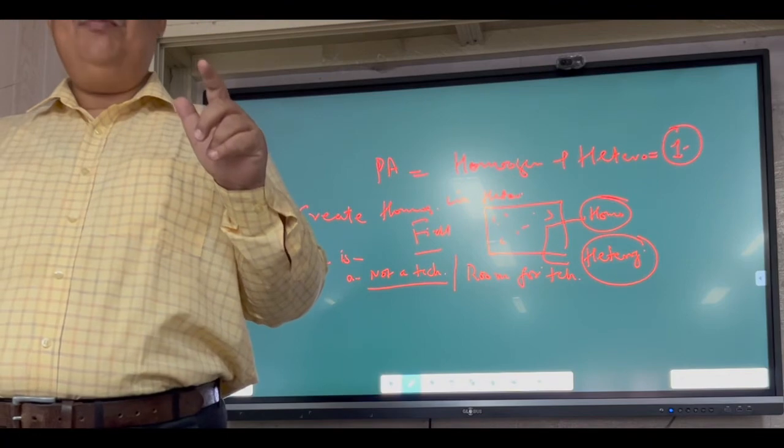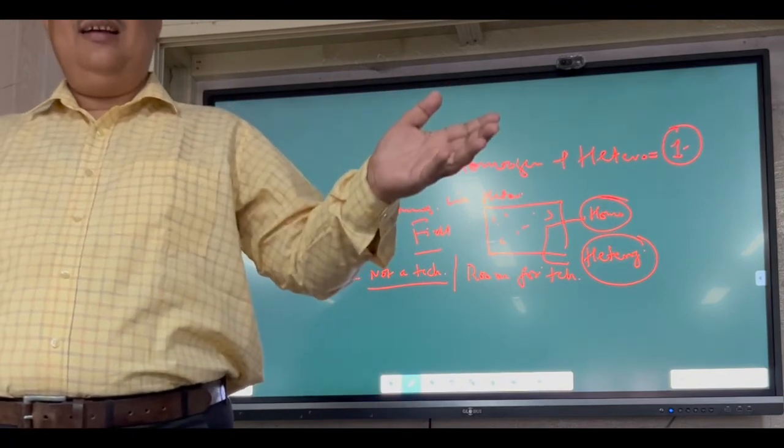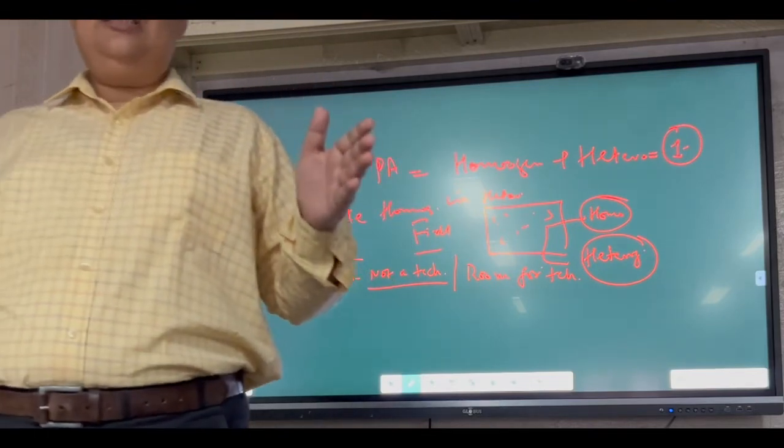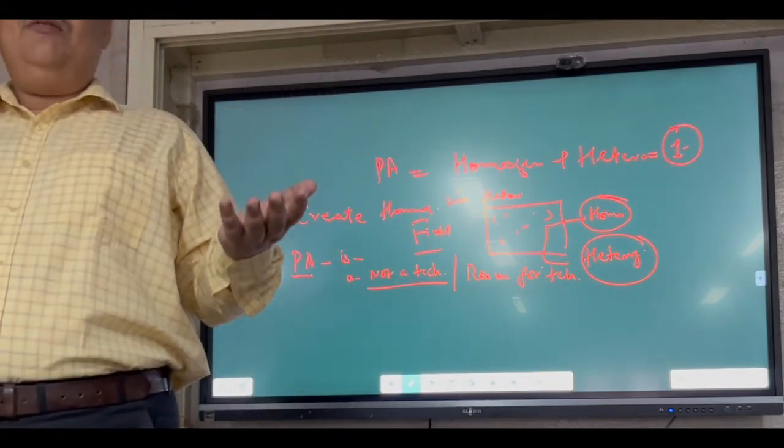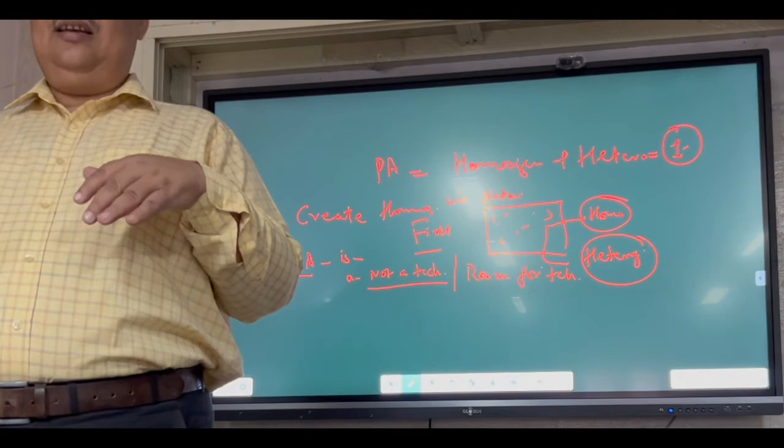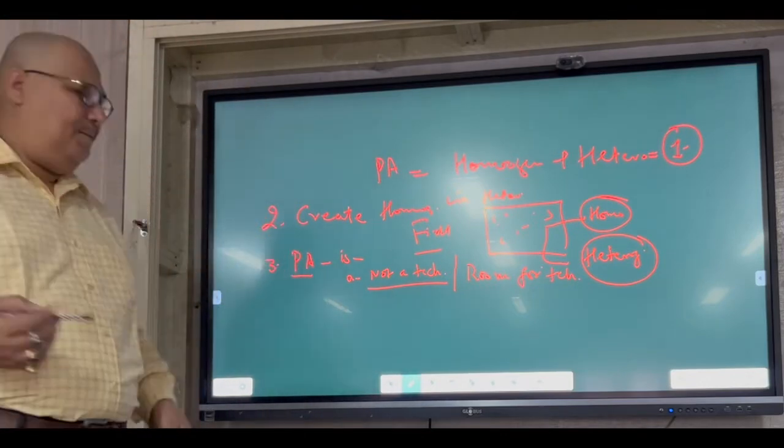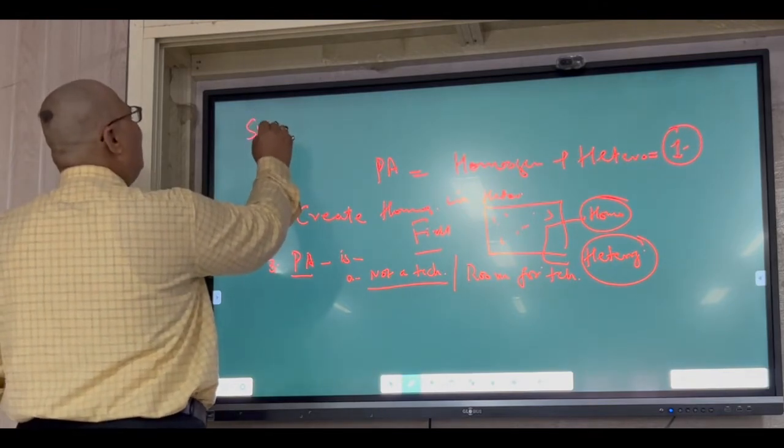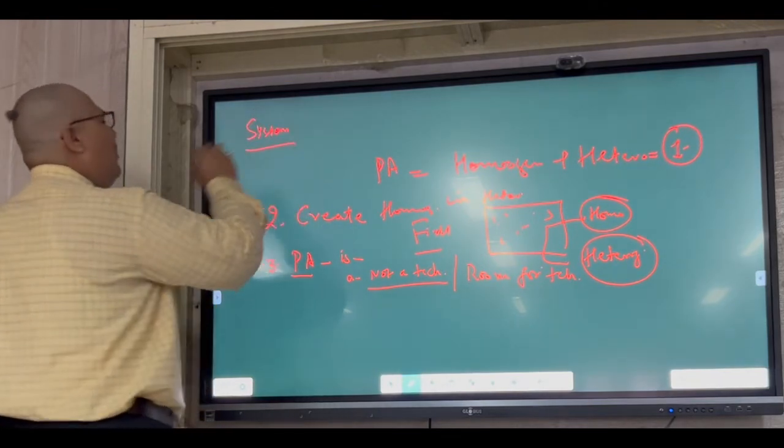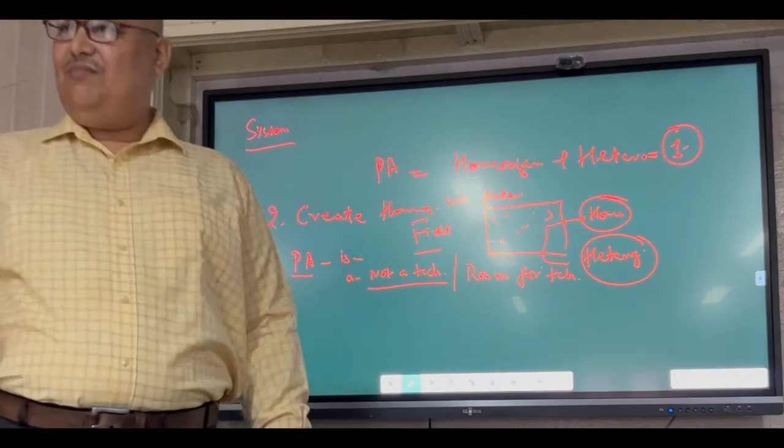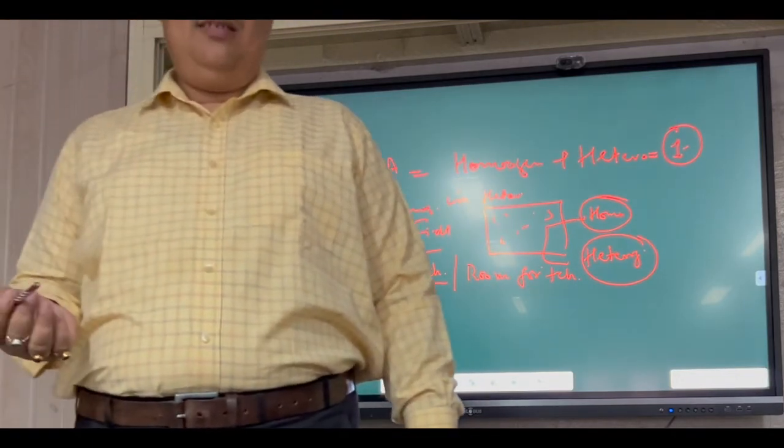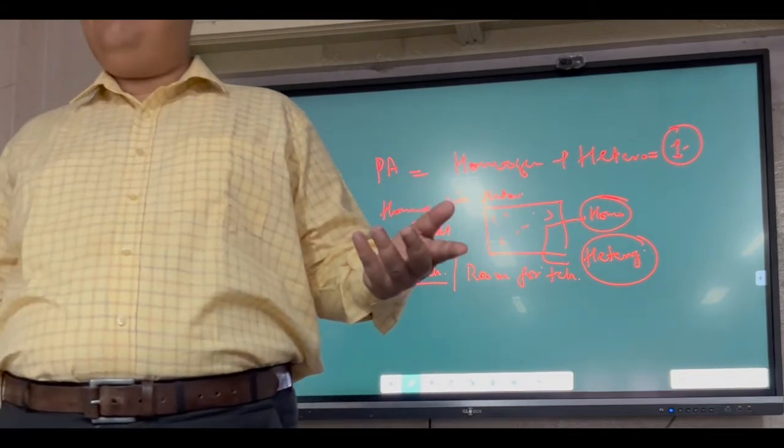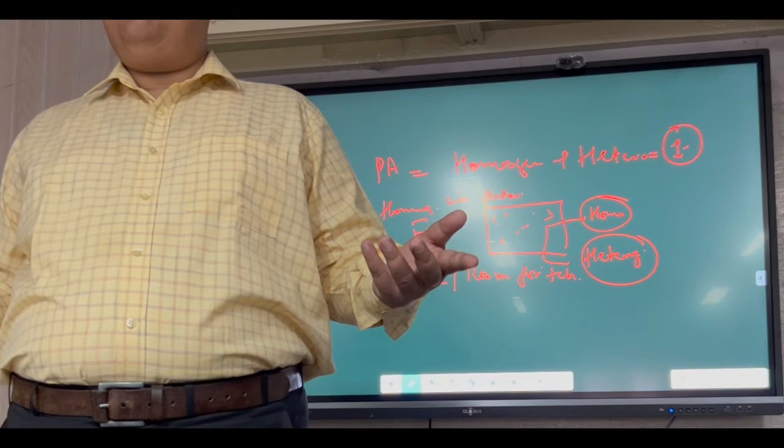It is a room for technology. Room means a chamber in which different technologies work simultaneously in a system. Now this is a system. You know system. What do you mean by system? Education system, body system, management system.